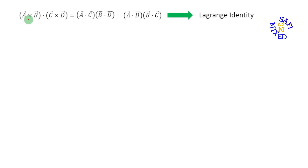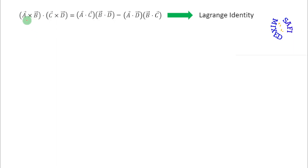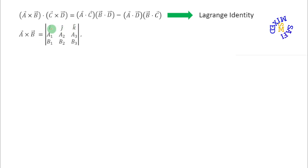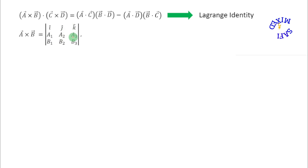I begin from a cross b. The vector product a cross b can be expressed in the form of a determinant where i, j, and k are unit vectors along the x, y, and z axes of Cartesian coordinates, and a1, a2, a3 are the components of vector a in the directions of i, j, and k.